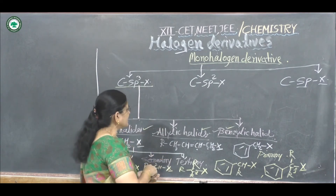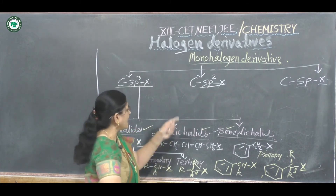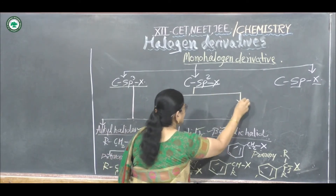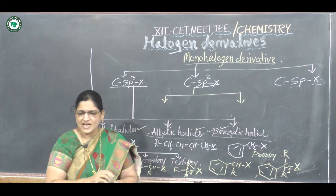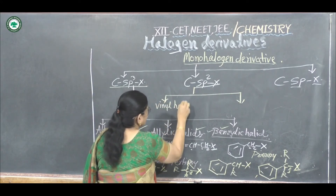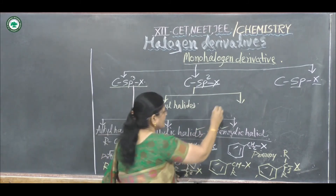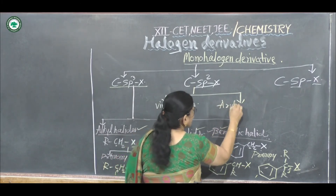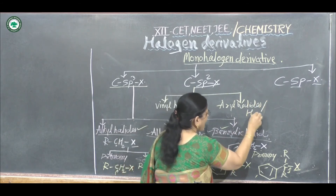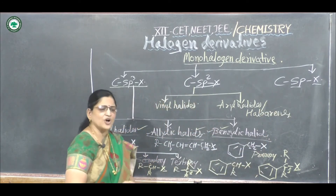The second type is sp2-X, meaning the halogen atom is bonded to an sp2 type of hybridized carbon atom. These are again classified into vinyl halides and aryl halides, also called haloarenes.